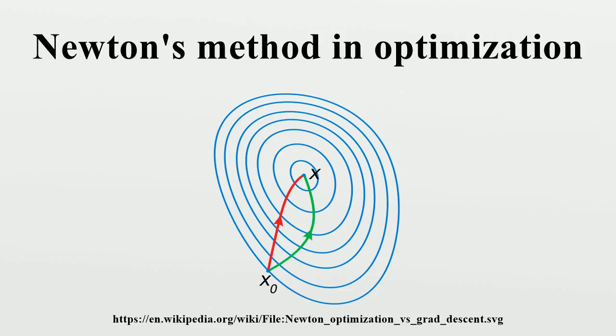In optimization, Newton's method is applied to the derivative f' of a twice-differentiable function f to find the roots of the derivative equals zero, also known as the stationary points of f. In the one-dimensional problem,